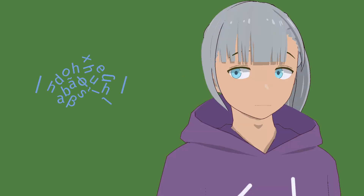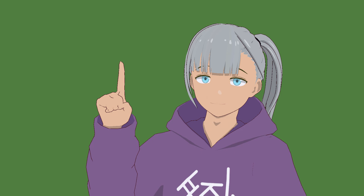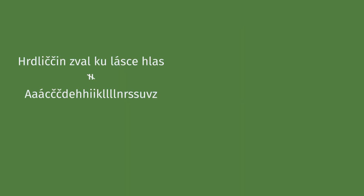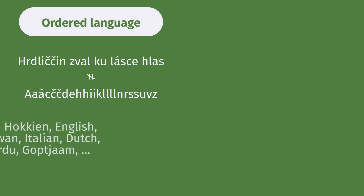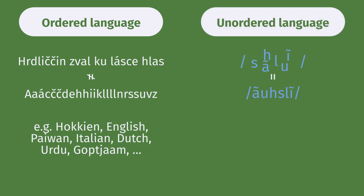But is it possible for a language to have completely flexible phoneme order? In other words, can there be a language where the order of the phonemes conveys no information? To start, let's define some terms. We'll call languages where the order of phonemes in the utterance conveys some information "ordered languages" — so all natural languages are ordered languages. And languages where the order conveys no information, we'll call "unordered languages."